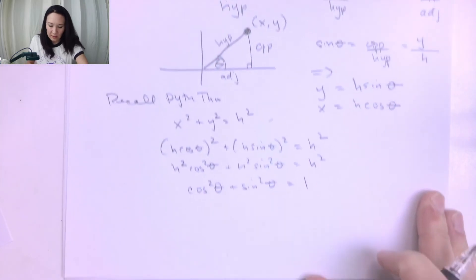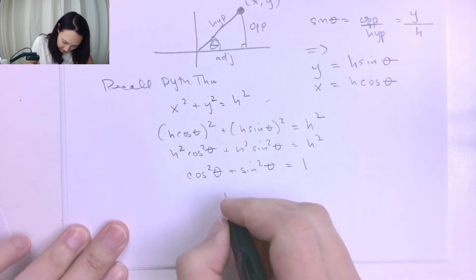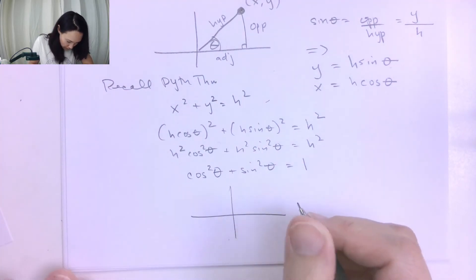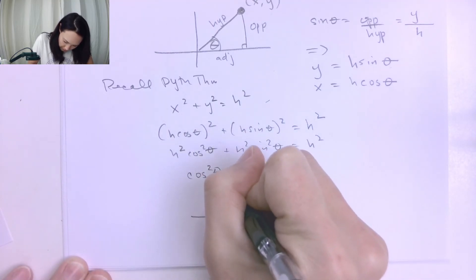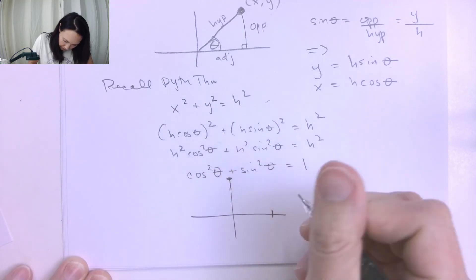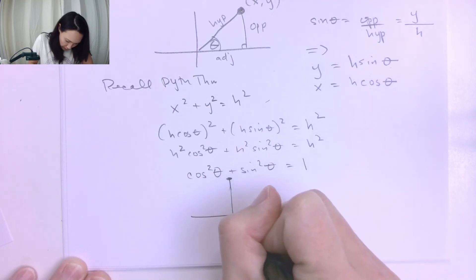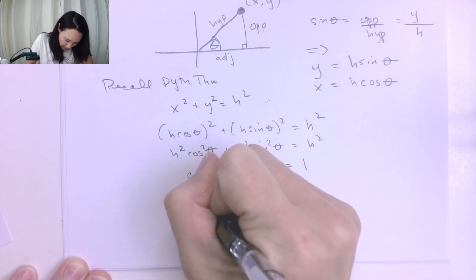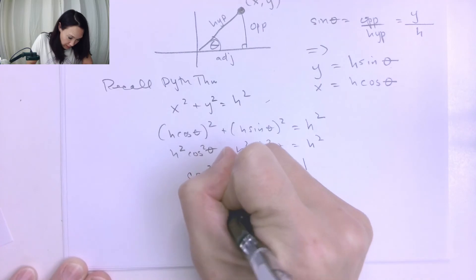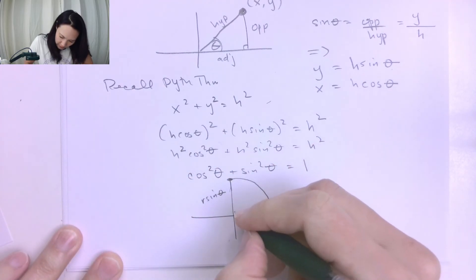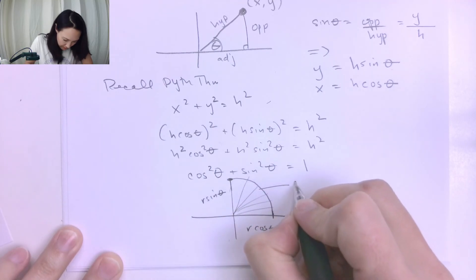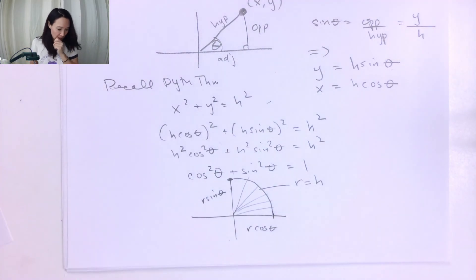So graphically, this means that on the unit circle, if we had this point right here, this is going to be R cos θ and this is going to be R sin θ, where if we sweep out the hypotenuse of this triangle, R equals the hypotenuse of the triangle.